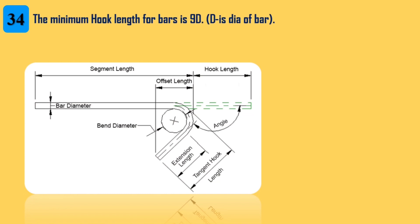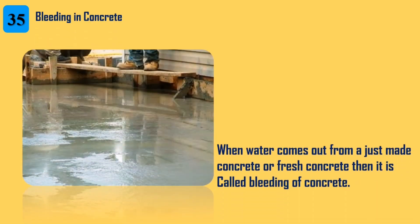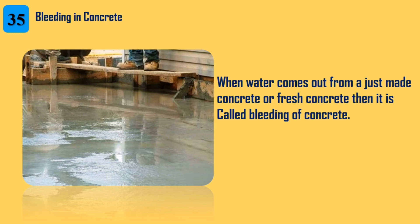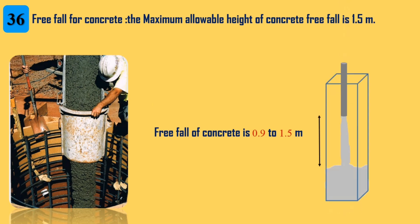34. The minimum hook length for bars is 9 times the bar diameter. 35. Bleeding in concrete: when water comes out from a just-made or fresh concrete, it is called bleeding of concrete. 36. The maximum allowable height of concrete free fall is 1.5 m.